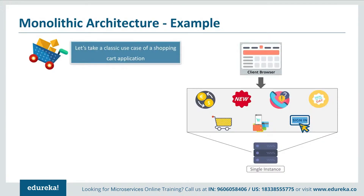Let's understand more about monolithic architecture using a shopping cart application. As a user, when you open a shopping cart application, you see different features for handling wishlist, new labels, new brands in the markets, customer services, and so on. But if the developers decided to build this application on a single framework, then all the features were put together on a single database. This not only created problems for scalability but also for fault tolerance and agility.